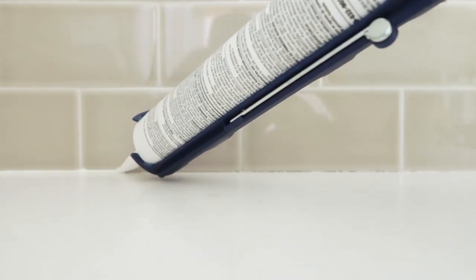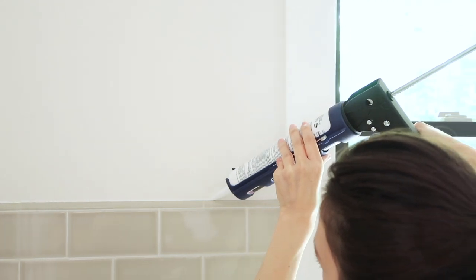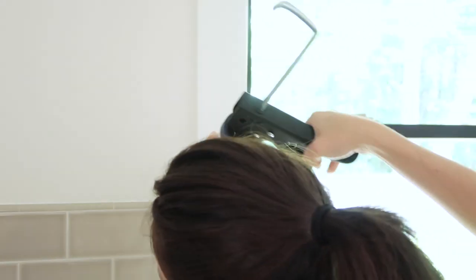The final step in completing the look of the tile is to fill the space where the tile meets the countertop, the trim, or wall. For this we're using a tube of caulk that is color matched to the grout that we've used.